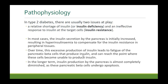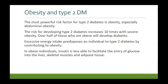As time passes, this excessive production of insulin leads to fatigue of the beta cells, and that can reach the point where these cells become unable to produce insulin. In the longer term, insulin production by the pancreas is almost completely diminished as these pancreatic beta cells undergo apoptosis.